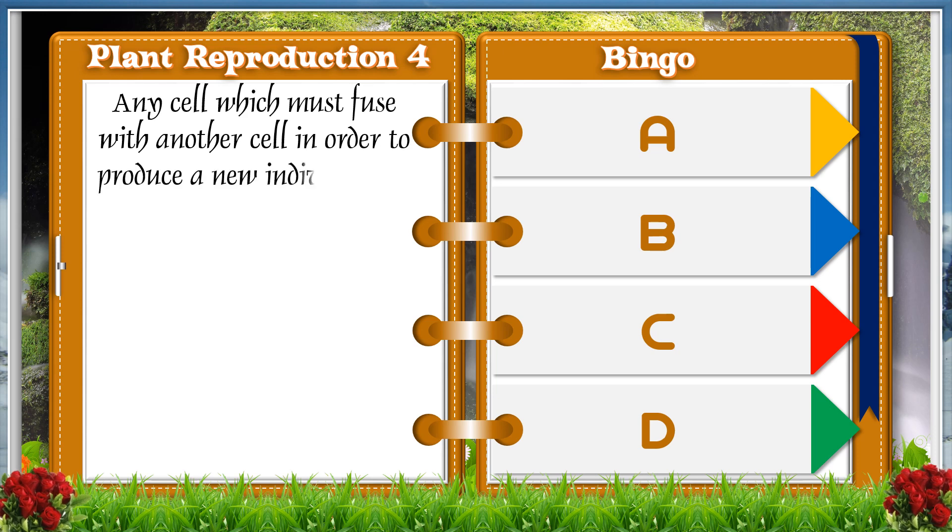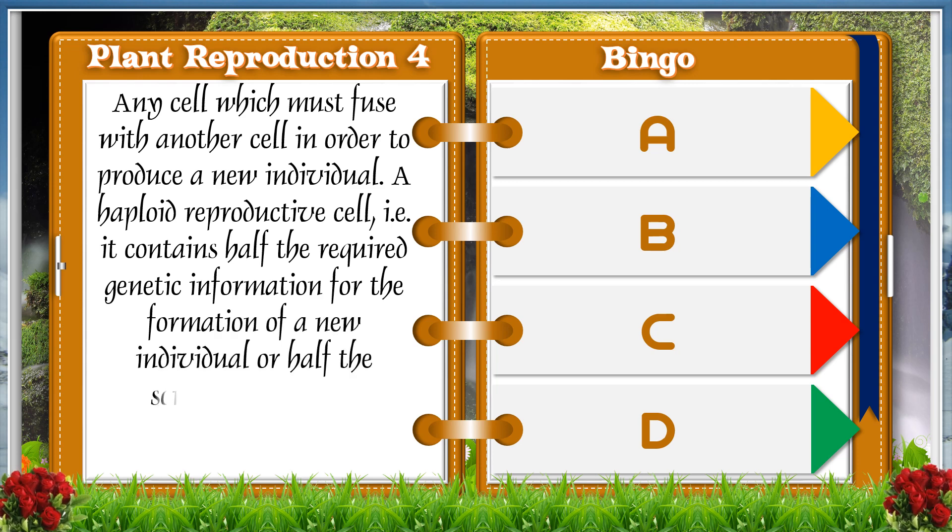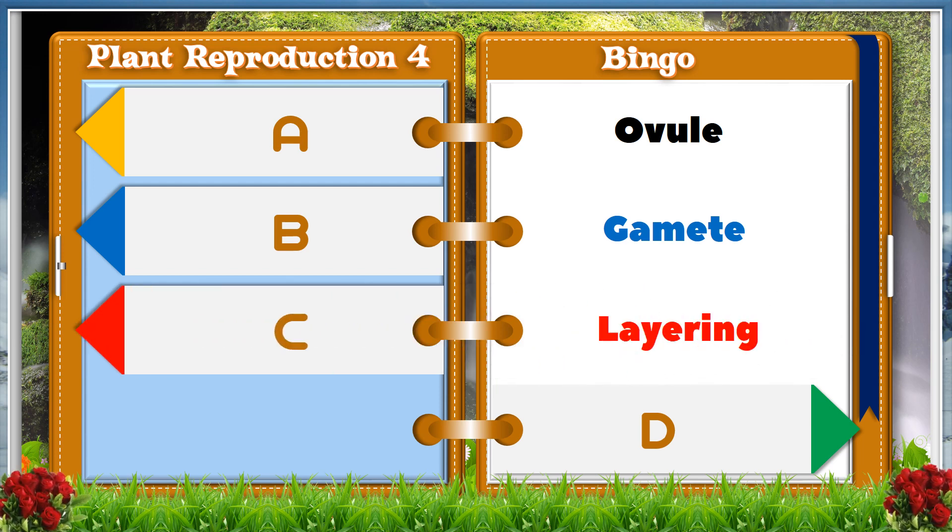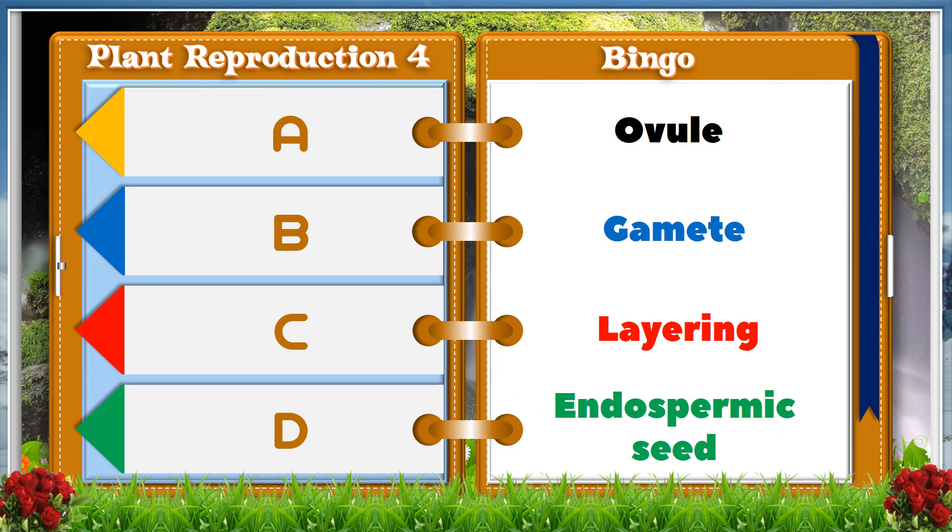Any cell which must fuse with another cell in order to produce a new individual, a haploid reproductive cell, i.e. it contains half the required genetic information for the formation of a new individual, or half the somatic number of chromosomes. A. Ovule. B. Gamete. C. Layering. D. Endospermic seed. And the answer is B, Gamete.